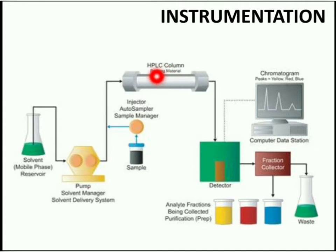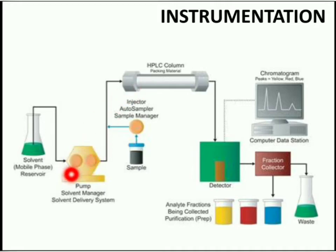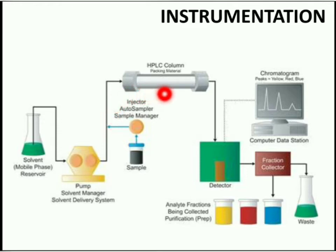The stationary phase is a granular material with very small porous particle size, packed in a column. The mobile phase — a solvent or solvent mixture — is forced at very high pressure through the separating column, usually by the use of a pump. The sample is injected into the mobile phase flow from the pump to the separating column using a microsyringe. In the complete process, the individual components of the sample migrate through the column at different rates because of their varying affinities towards the stationary phase.